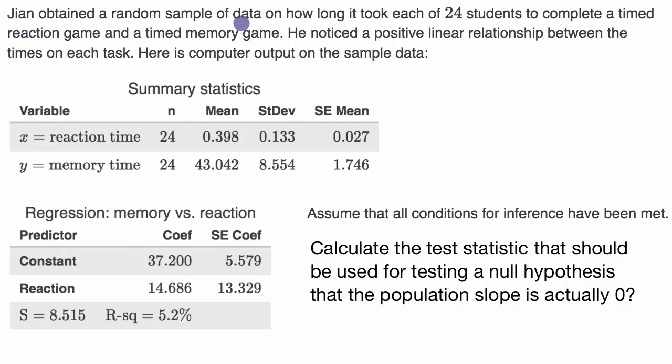Jian obtained a random sample of data on how long it took each of 24 students to complete a timed reaction game and a timed memory game. He noticed a positive linear relationship between the times on each task. Here is computer output on the sample data.